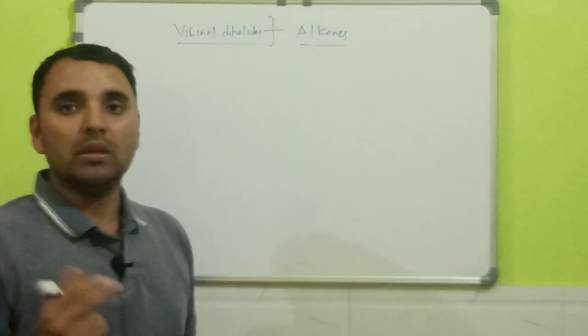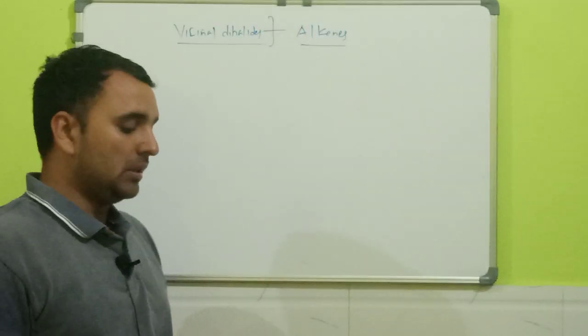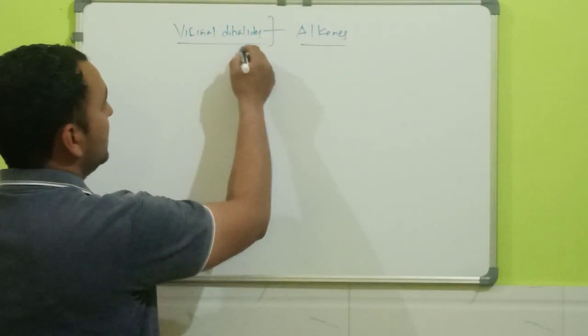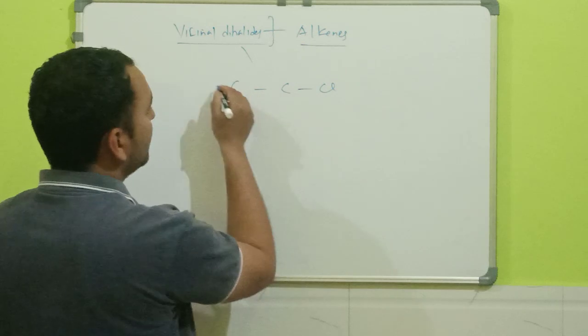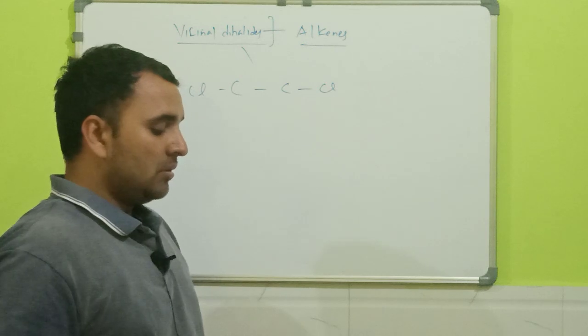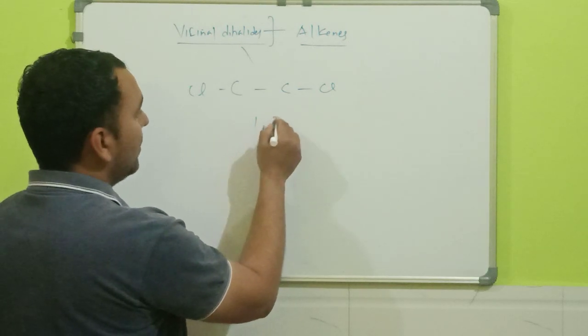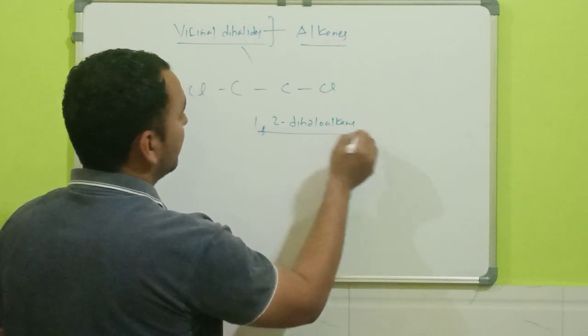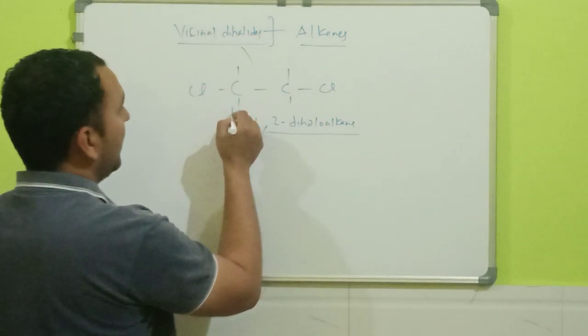Before going to preparation of alkenes, let us understand what you understand by vicinal dihalides. Vicinal dihalides are the dihalides in which two halogen atoms are attached to two adjacent carbon atoms. So you see that two adjacent carbon atoms are there and to these carbon atoms two halogen atoms are attached. Let us see, I have taken fluorine atom.